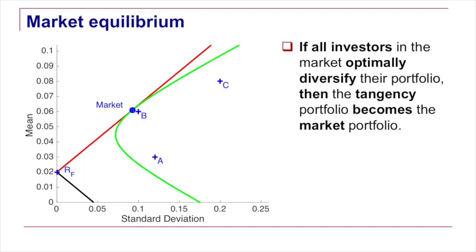So the market, the relative weight of each stock in the total market capitalization corresponds exactly to the portfolio weight of the tangency portfolio. This is depicted in this graph where the tangency point between the green line and the red line is the market portfolio.